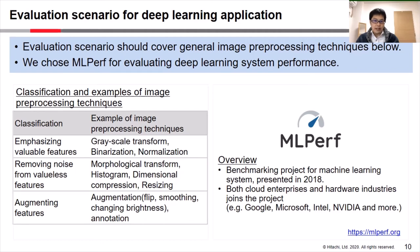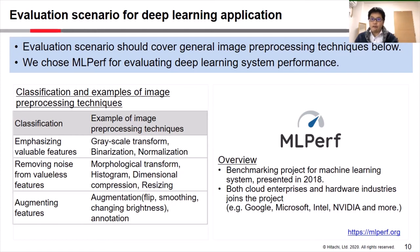One class is emphasizing valuable features, the second is removing noise from valueless features, and the third is augmenting features. We chose MLPerf for evaluating deep learning system performance. MLPerf is a benchmarking project for machine learning systems presented in 2018. Both cloud enterprises such as Google and Microsoft and hardware companies such as Intel and NVIDIA joined the project.